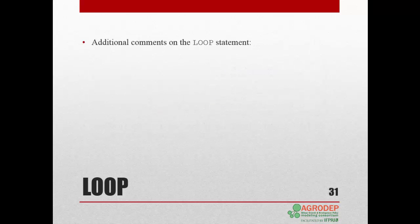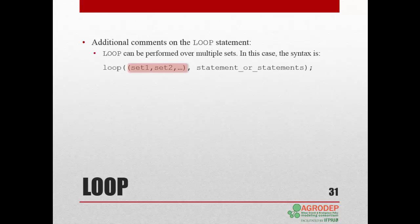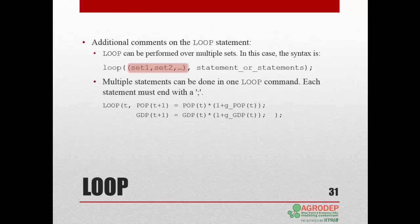Some additional comments on the loop statement: a loop command can be performed over multiple sets. In this case, the sets are enclosed within parentheses and separated by a comma, followed by the statements that will be executed on each of the sets. A loop command can include multiple statements — for example, in addition to computing a population index, we could also compute a GDP index. Each statement must end with a semicolon, and the loop statement must also end with a closing parenthesis and a semicolon. Finally, you cannot make declarations or define equations within a loop.